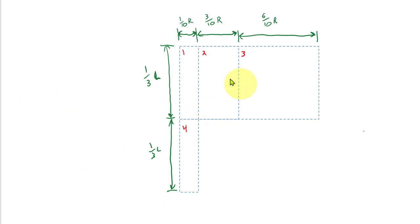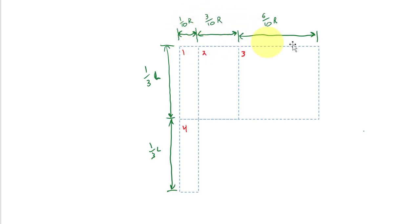We have a non-uniform spacing in the radial direction. The width of control volume 1 will be 1 tenth of the cell radius, control volume 2 will be 3 tenths of the radius, and control volume 3 will be 6 tenths of the radius. In the axial direction we'll have uniform spacing where the height of each element is 1 third of the length of the cell.